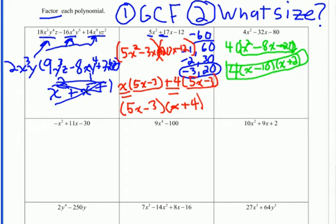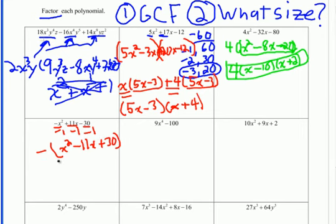For this next problem, look for a GCF. There is no GCF, but notice the leading coefficient is negative. To make this easier, just factor out a negative 1. Dividing everything by negative 1, I pull out the negative and get positive x² minus 11x plus 30 inside. What multiplies to positive 30 and adds to negative 11? Since they multiply to be positive, they're the same sign, and since they add to be negative, they're both negative: negative 6 and negative 5. Don't forget the negative you pulled out.